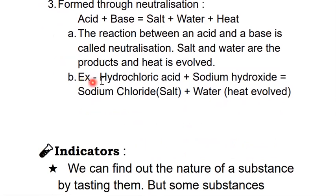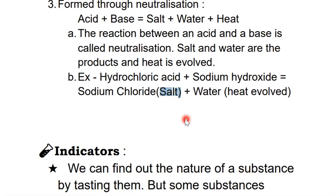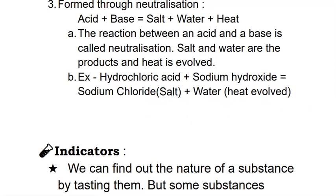Here's an example: Hydrochloric acid (HCl) + Sodium hydroxide (NaOH) = Sodium chloride + Water. Sodium chloride is neither acid nor base because it is a salt. Salts are neutral substances — neither acids nor bases. Water is also a product of this reaction, and heat is produced.